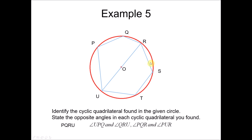The second cyclic quadrilateral is RSTU. For this quadrilateral, angle URS and angle STU form a pair of opposite angles. The second pair is angle RST and angle TUR — they are a pair of opposite angles.